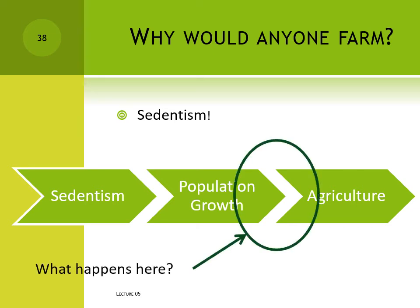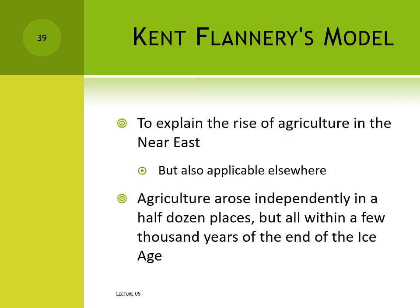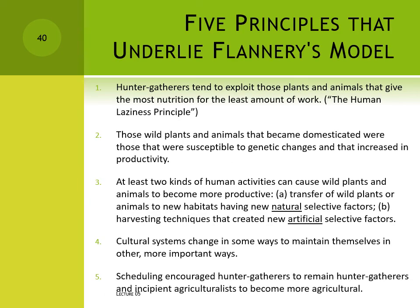The best theory about the rise of agriculture was proposed by Kent Flannery in the 1970s. Flannery was trying to explain the rise of agriculture in the Near East following the end of the last ice age, but his theory is applicable to other parts of the world as well. Agriculture developed independently in a half dozen places around the globe within a remarkably short period of a few thousand years after the end of the ice age, suggesting that the ultimate cause of the transition had to do with climate change. Flannery's model rests on several explicit principles – no scholar would dispute any of them individually. What Flannery did was ask what happens when all five apply to the same culture at the end of the ice age in the ancient Near East.